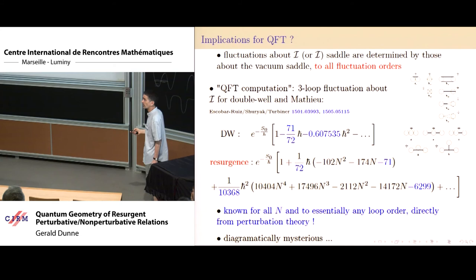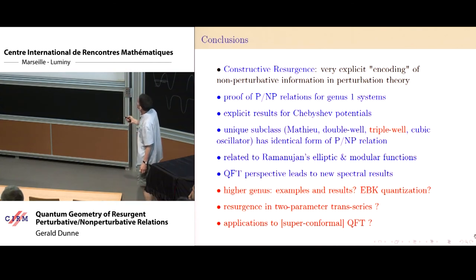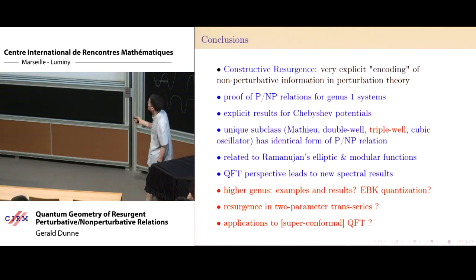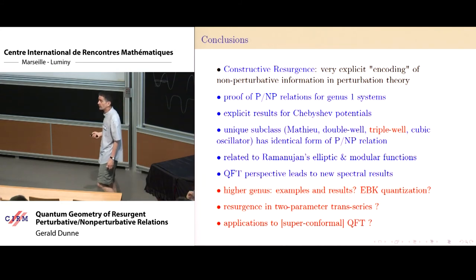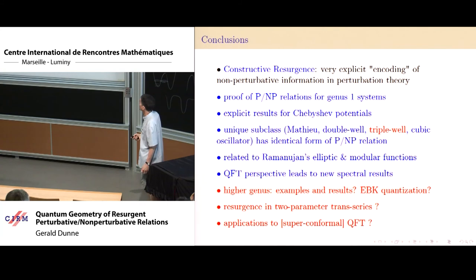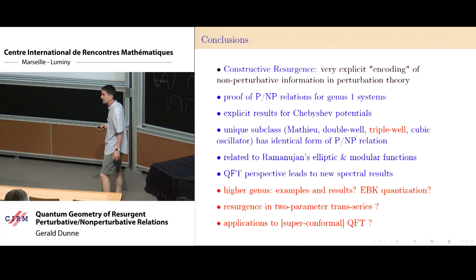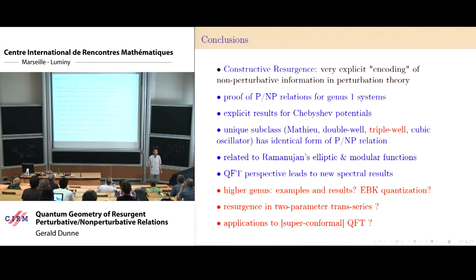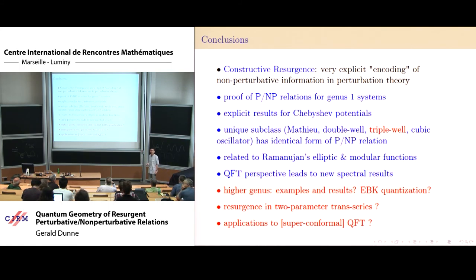To conclude: there are these special forms of resurgent relations that show up. We now understand why they're occurring geometrically. We found a new example — the triple well — where it also occurs. There's an interesting relation to number-theoretic structure that appears to be important also in the quantization: exactly these four cases have this relation when quantized. There are outstanding problems about higher genus, about two-parameter trans-series rather than one-parameter trans-series, and potential applications to quantum field theory. Thank you.